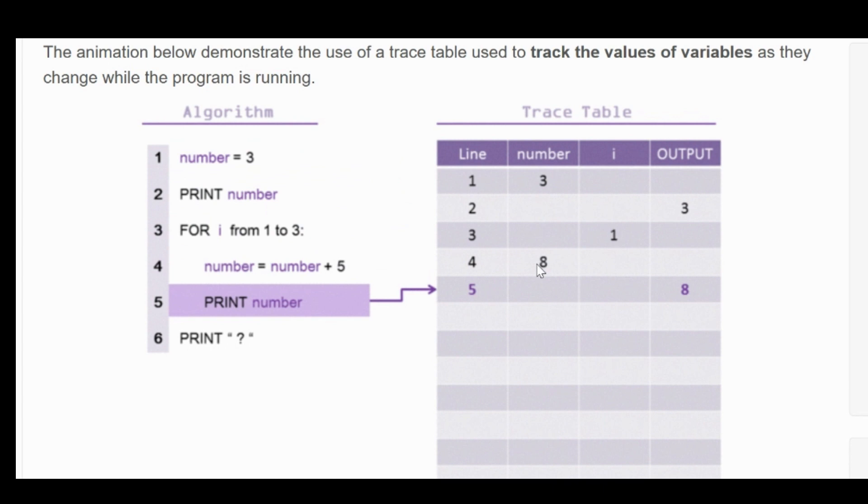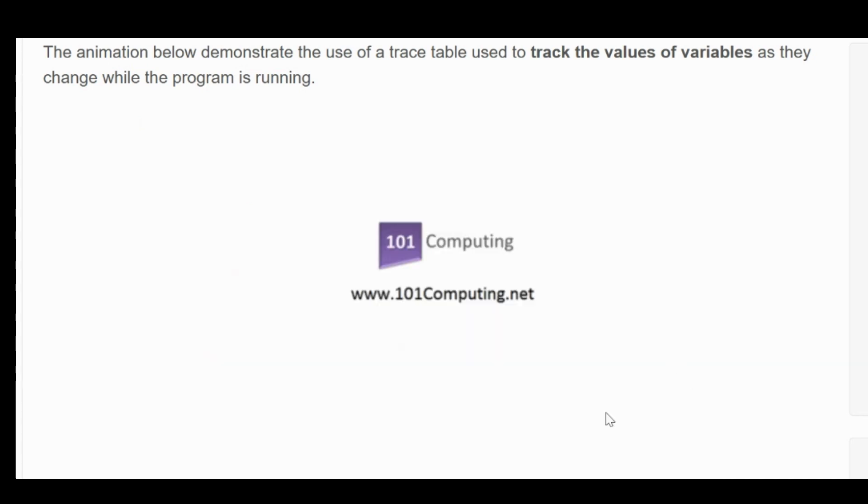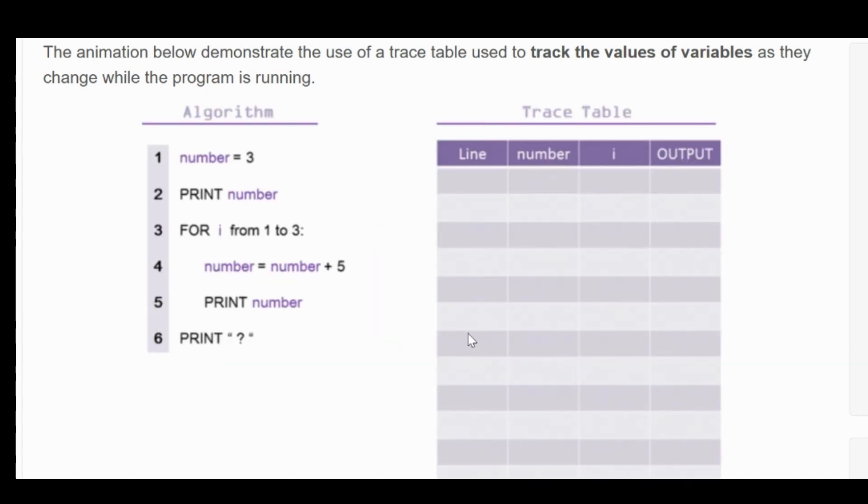And now you've got the number equals number plus five. So you've got eight. You're then printing that, so it's outputted. And then you've got i is equal to two. The number is now 13 because you've got eight plus five. And then you're printing 13. And then you've got three again and so on.